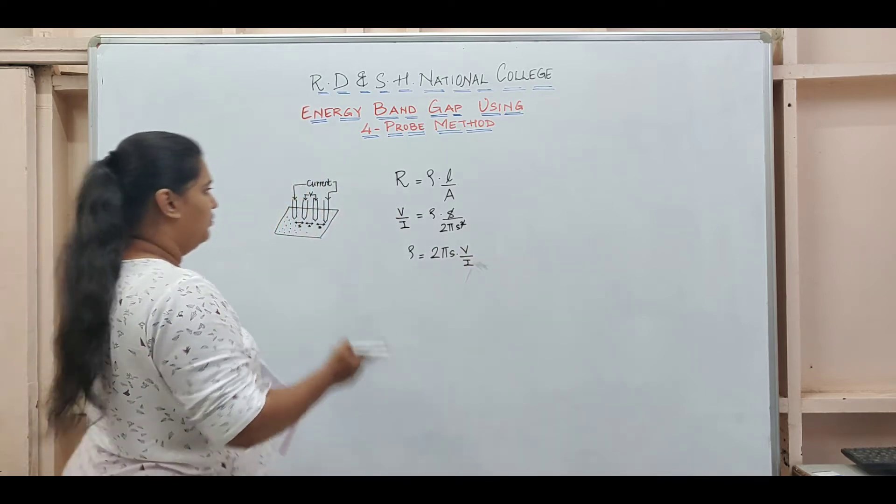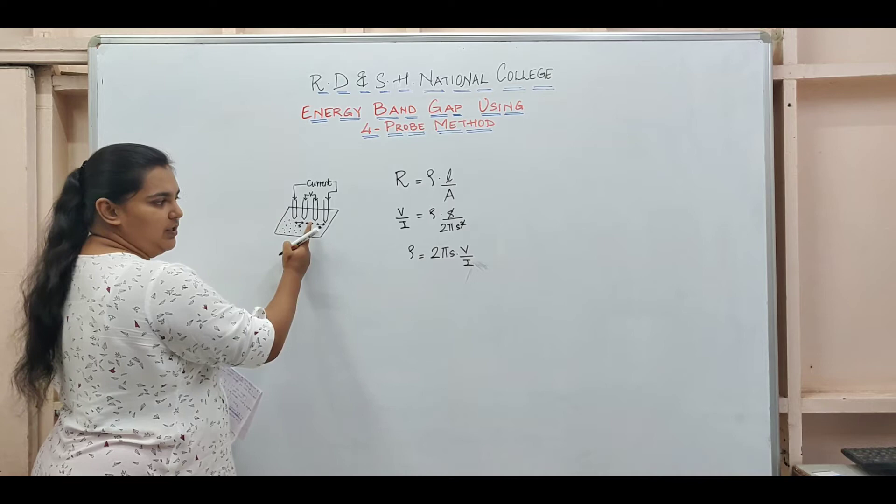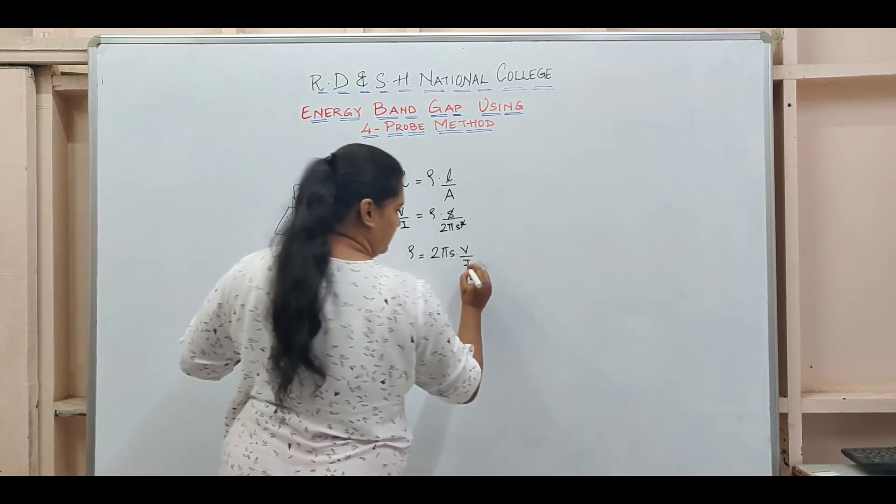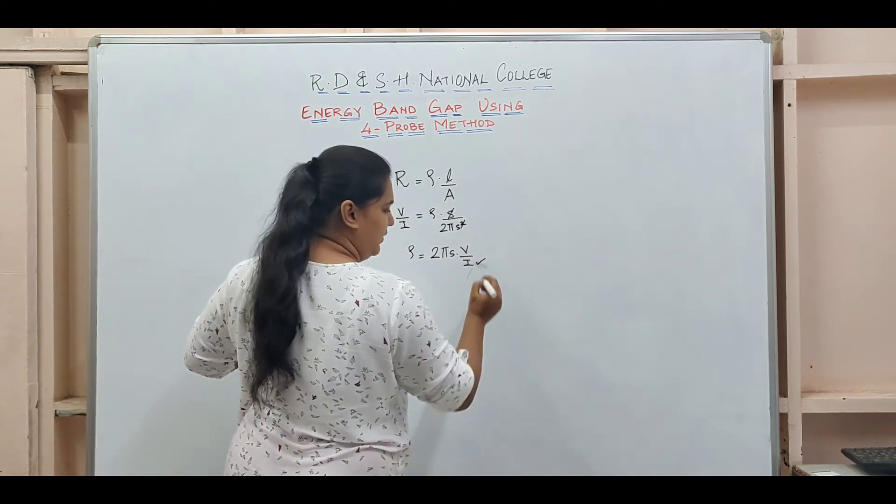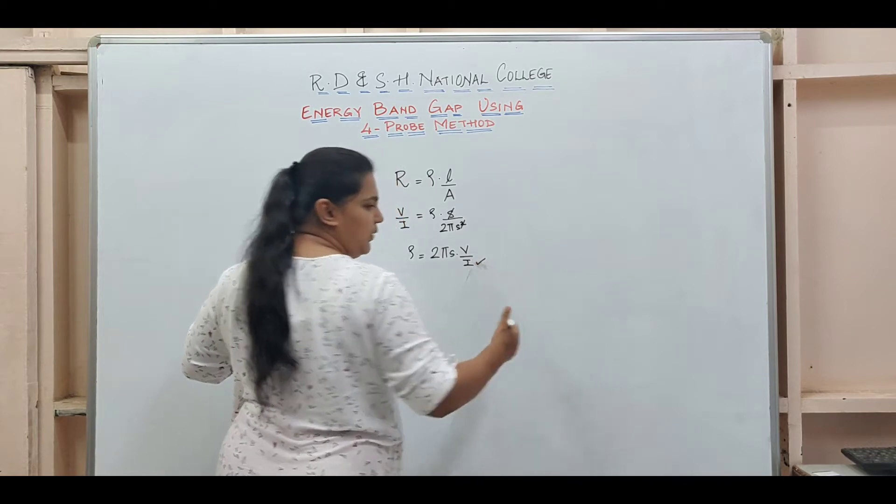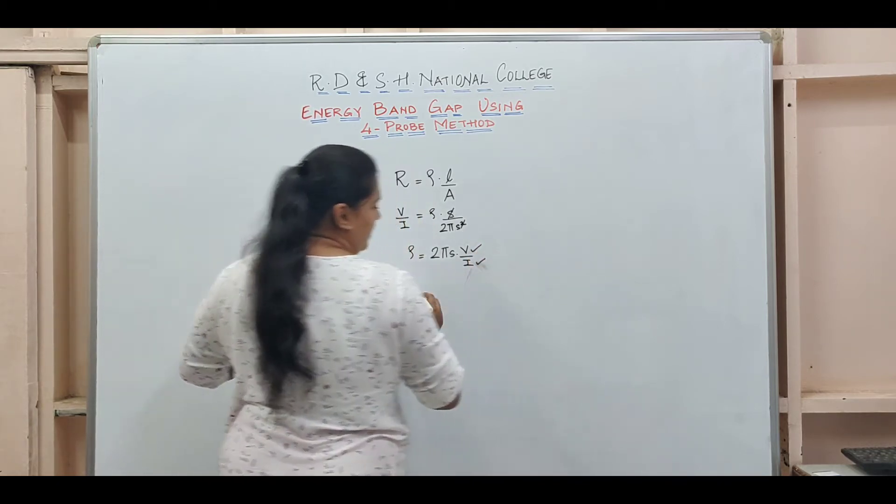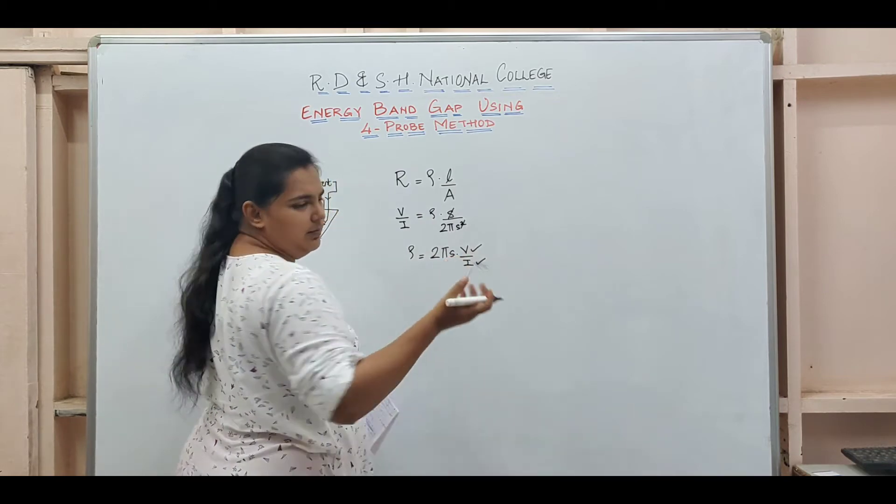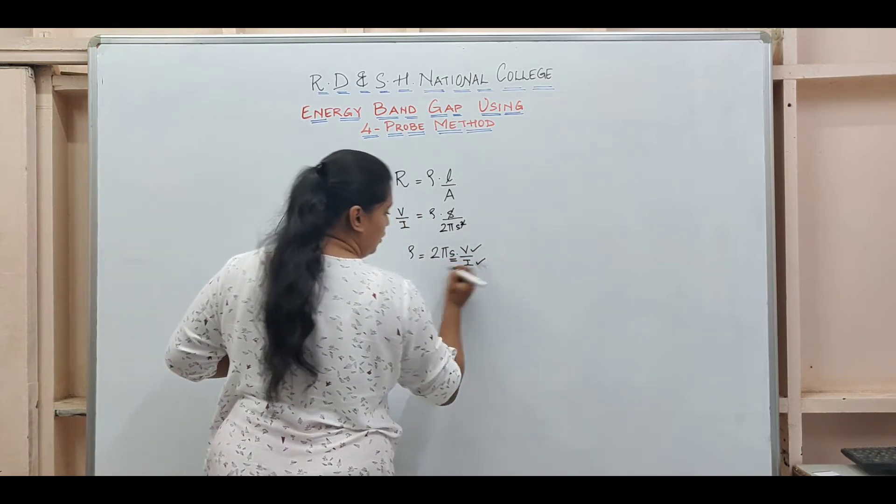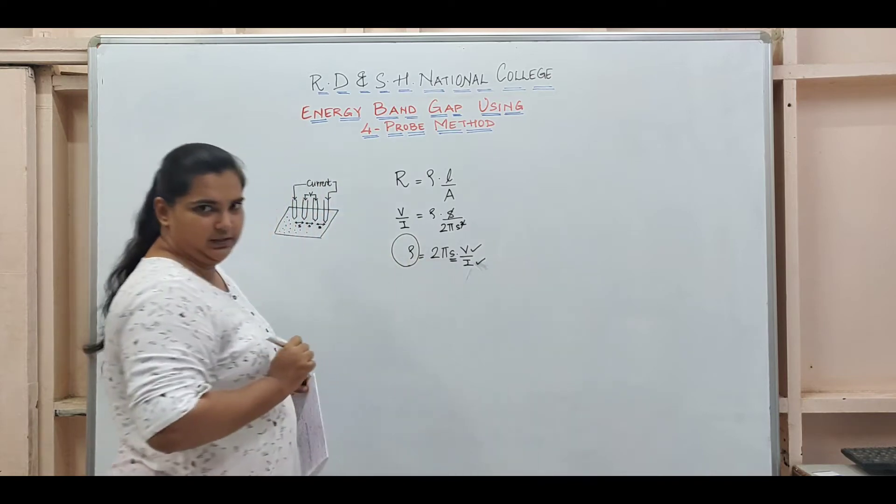Like I told you, we are supplying current and measuring voltage. If we supply current, we know the current, we will keep the current fixed. We increase the temperature, so we note down V. Using this, the manufacturer will give you the dimensions of the sample, so you can calculate resistivity.